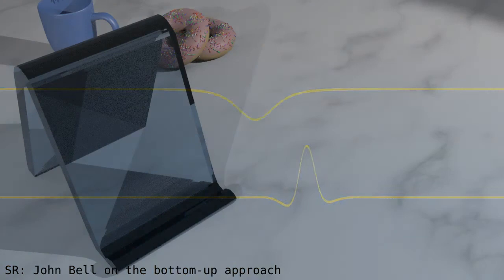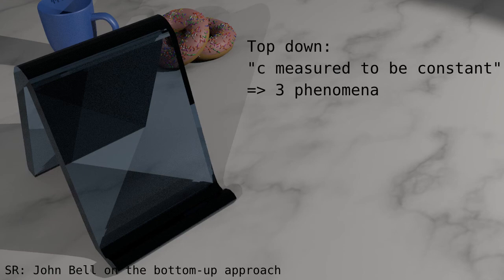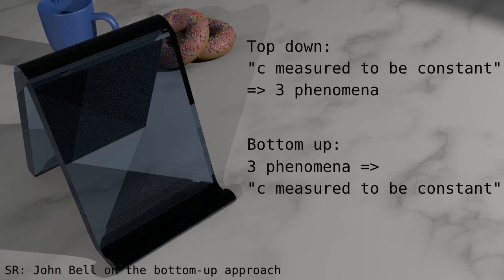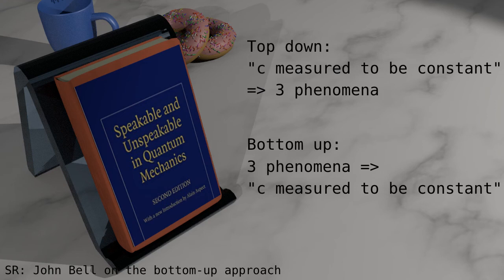Special relativity is often presented top-down, where we start with the assumption that the speed of light is measured to be constant. We use the bottom-up approach. John Bell also likes the bottom-up approach as being more pedagogical. I strongly recommend his essay, How to Teach Special Relativity.